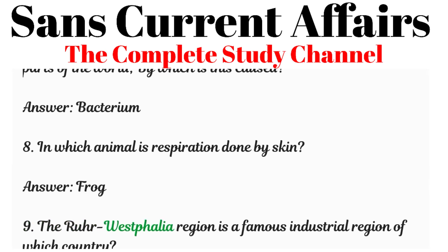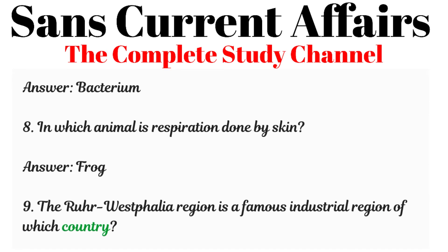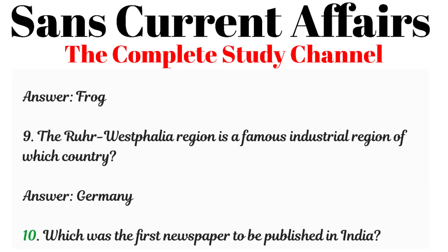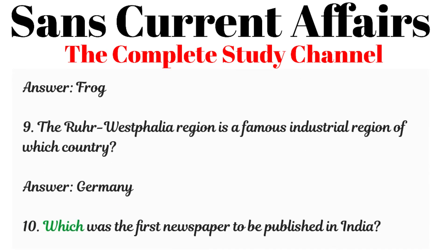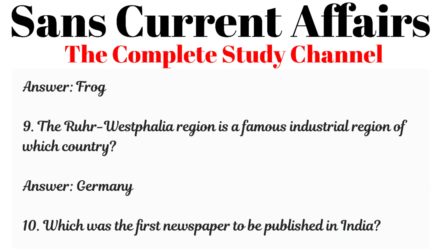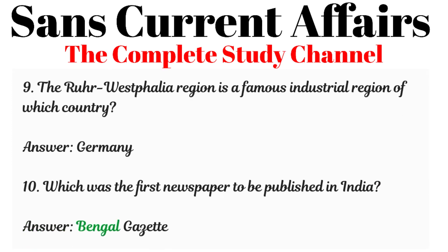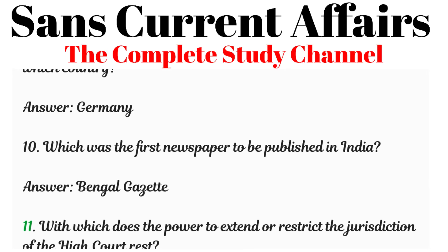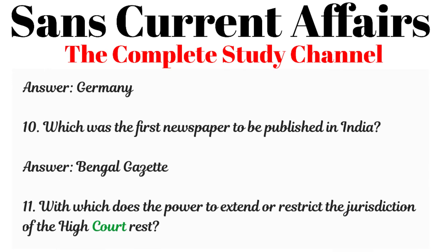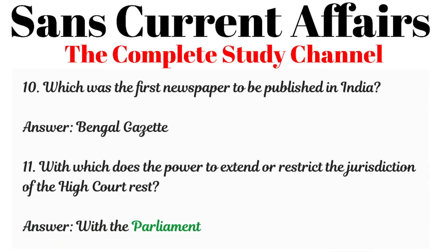Question 9: The Ruhr-Westphalia region is a famous industrial region of which country? Answered: Germany. Question 10: Which was the first newspaper to be published in India? Answered: Bengal Gazette. Question 11: With which does the power to extend or restrict the jurisdiction of the High Court rest? Answered: With the Parliament.